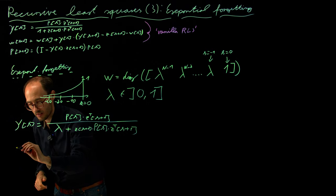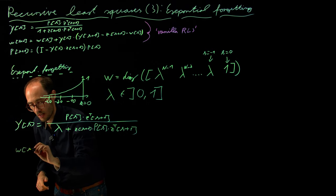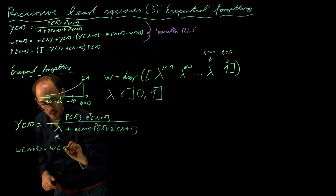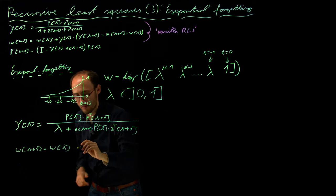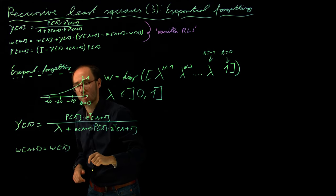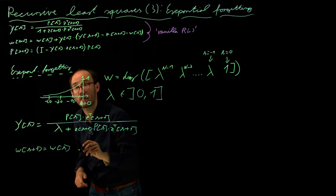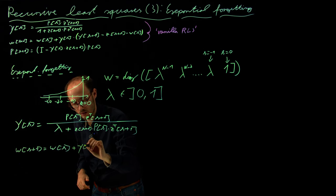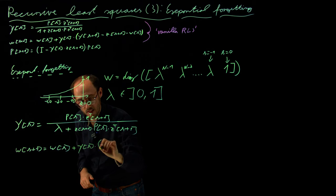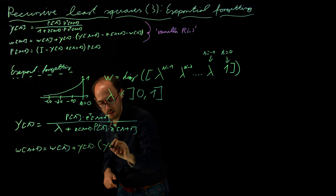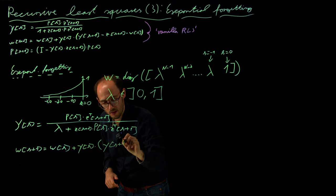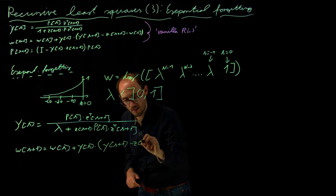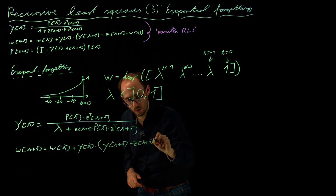Then the parameter update itself, wk plus 1 is equal to wk. So that is exactly a copy of the previous one. So correction factor is equal to pk plus 1 times the estimation error, yk plus 1 minus z k plus 1 times wk,